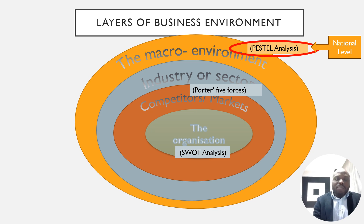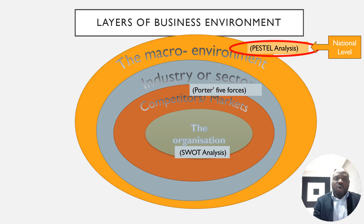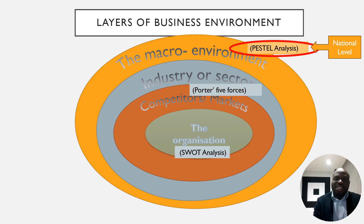Let us examine these layers of the business environment by looking at the macro environment. At the national level we can use the PESTLE analysis — P-E-S-T-E-L. P stands for political, E for economic, S for social, T for technological, E for ecological or environmental, and L for legal. You can analyze the macro environment through this lens.